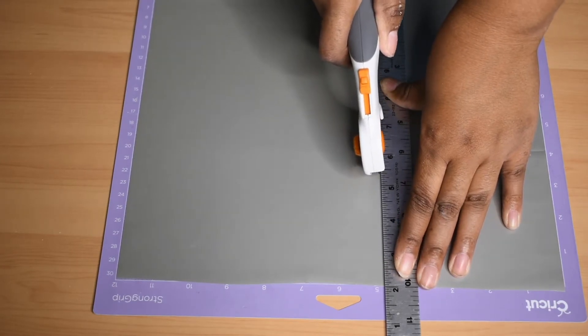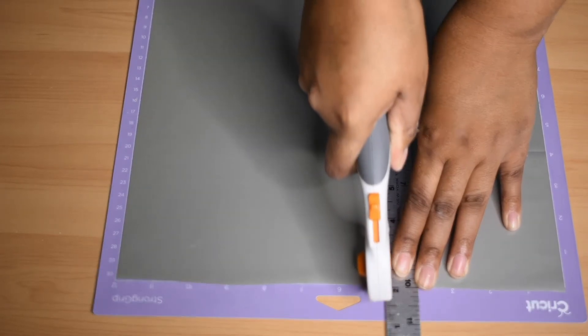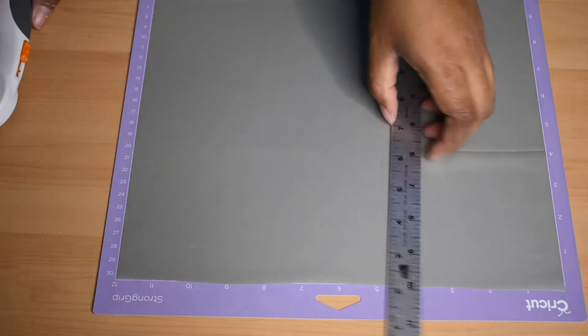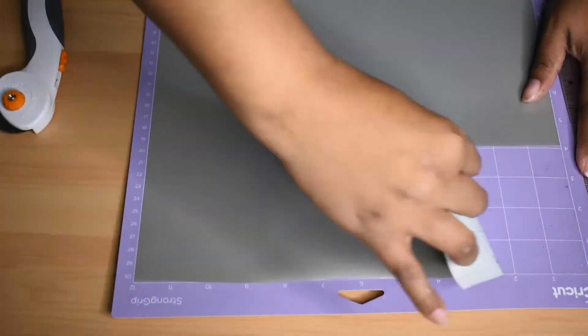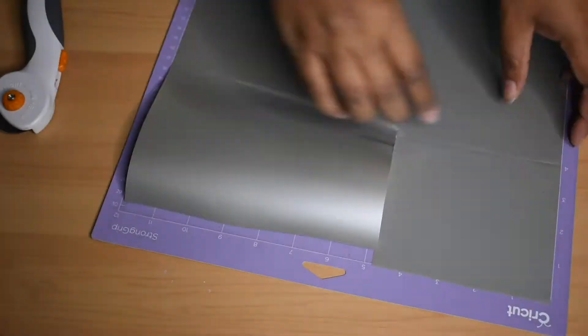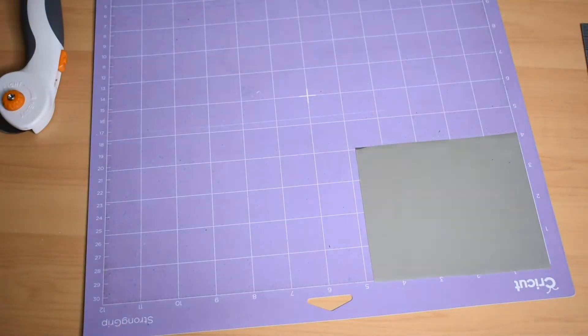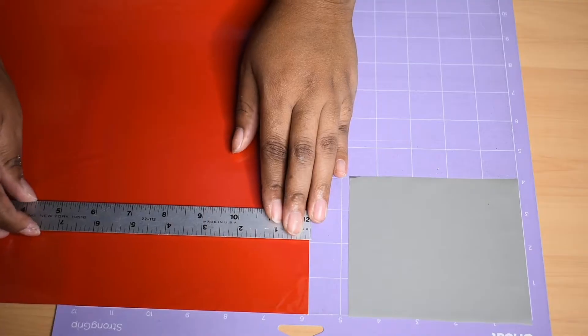What you need to do this project, you will need a Cricut Maker or a Cricut Explorer 2, Cricut vinyl. What type of vinyl I use, I use the Permanent Frost Gray as well as the Red Permanent Vinyl.